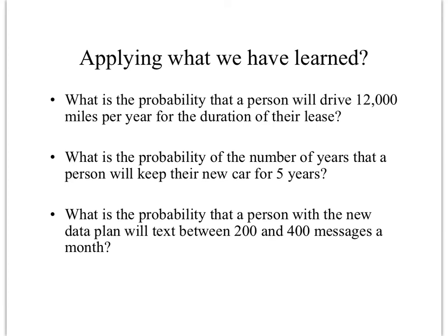Here's what we're going to apply: being able to determine what the probability is that a person will drive 12,000 miles per year for the duration of their lease, figuring out the probability of the number of years that a person will keep their new car for five years, and the probability that a person with a new data plan will text between 200 and 400 messages a month. You can think about when you're pricing things or even purchasing things, these are things that you might want to know when you're setting price points. So now we'll be able to figure them out.